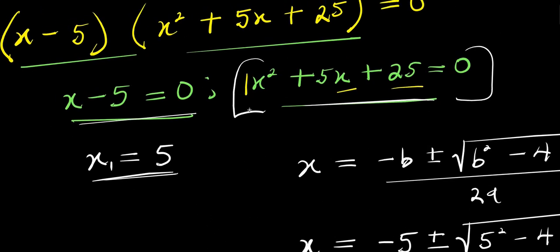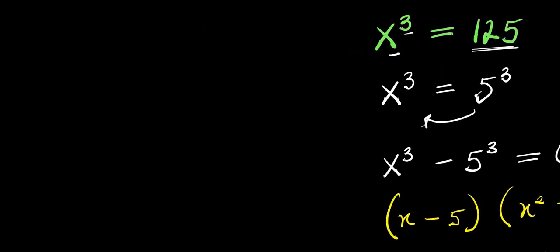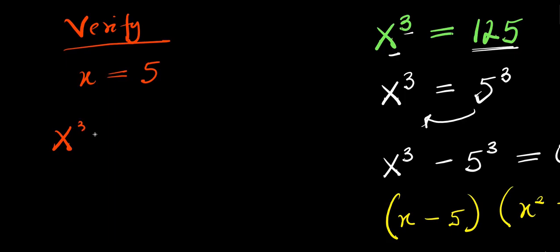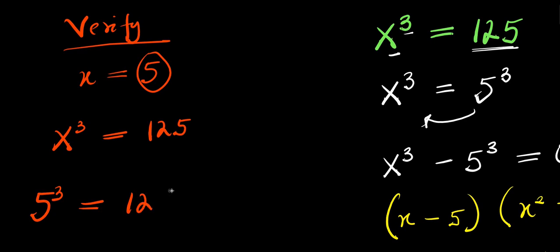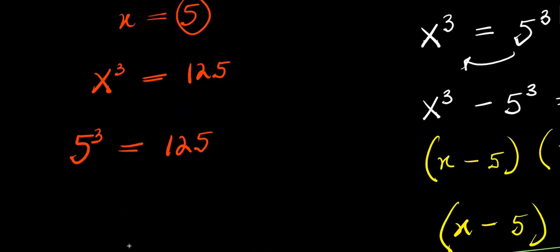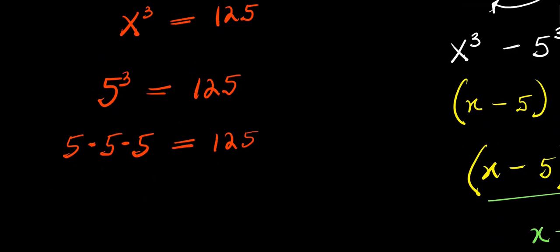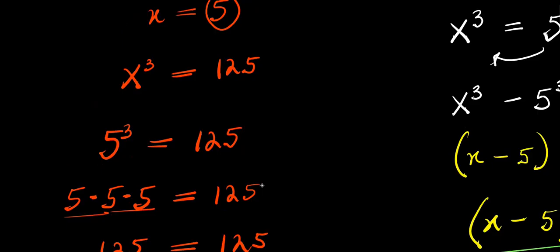So those are the two complex values for x, and the real value is x equals five. To verify: substitute x equals five, so x cubed equals five cubed equals one hundred twenty five. Five times five is twenty five, and twenty five times five is one hundred twenty five, which equals one hundred twenty five — both sides are the same.